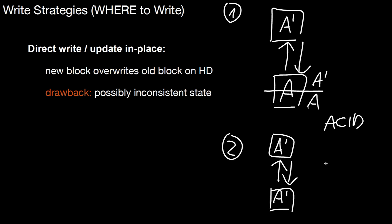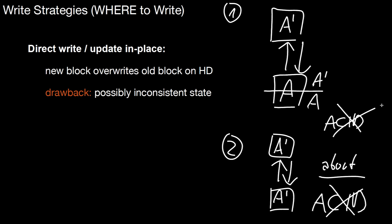But then the transaction aborts. That means all changes done by that transaction have to be removed by the database system — in other words, we have to get back to the old state, which is A. If you don't have an old copy of A, we can't go back to the old version, which means we can't remove the changes done by the aborting transaction — violating ACID again. So in both cases ACID would be violated. Direct write and update in place shouldn't be used without further techniques. Typically, databases use it in conjunction with logging. If you use it without logging, you will run into problems.